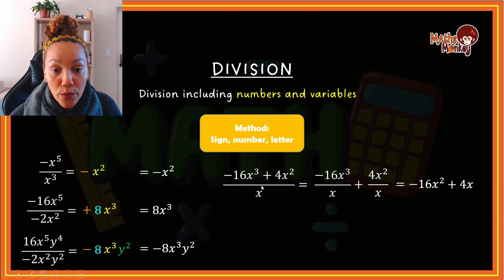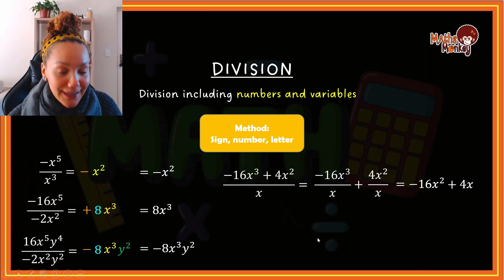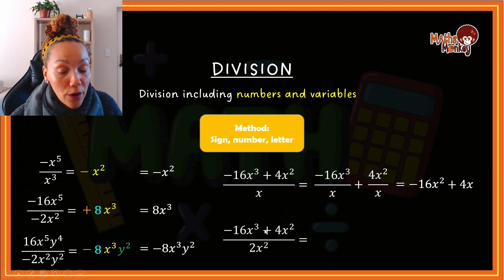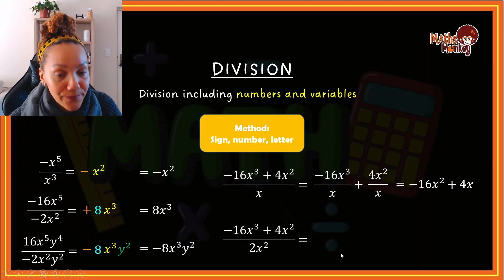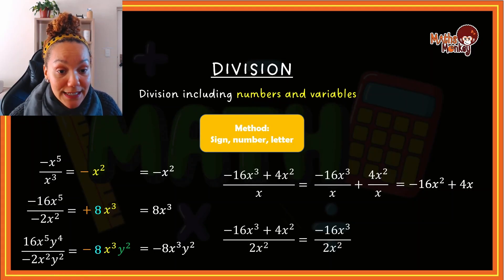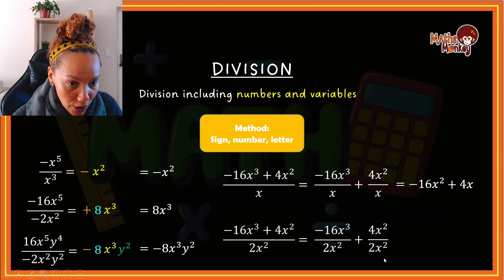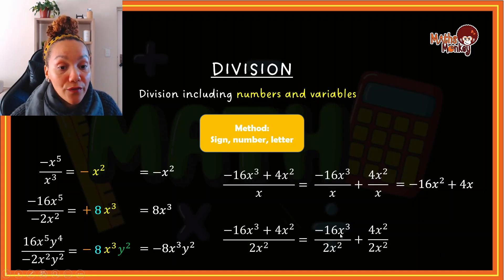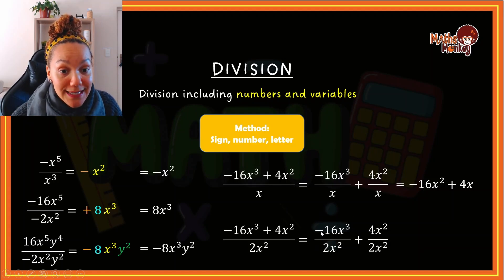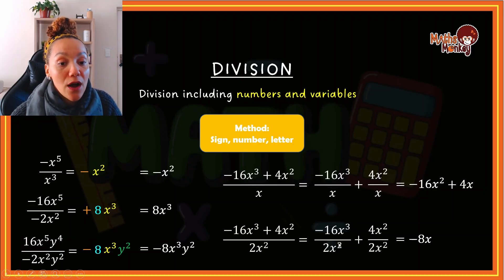That is how you answer the question when there is more than one term at the top. Let's try one more like this. Same scenario — at the top I have two terms and at the bottom one term. I split them: negative 16x to the 3 over the denominator plus 4x squared over the same denominator. Using sign, number, letter: negative divided by positive is negative; 16 divided by 2 is 8; x to the 3 over x to the 2 gives me x.